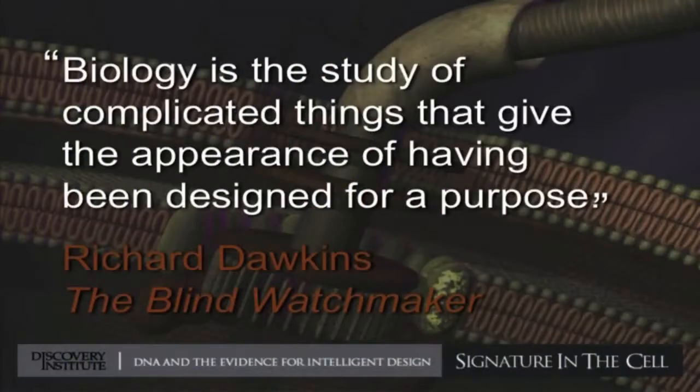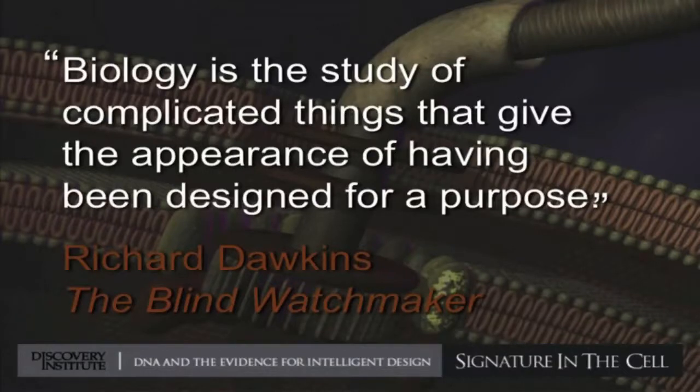Richard Dawkins says that biology is the study of complicated things that give the appearance of having been designed for a purpose. The key word there is 'appearance.' From a Darwinian point of view, that appearance is entirely illusory. Things look designed, living systems look designed, but they look that way because there is a purely undirected natural process that can produce that appearance without itself being designed or guided in any way. Natural selection can mimic the powers of a designing intelligence, say the Darwinians, but it is not designed or guided in any way.